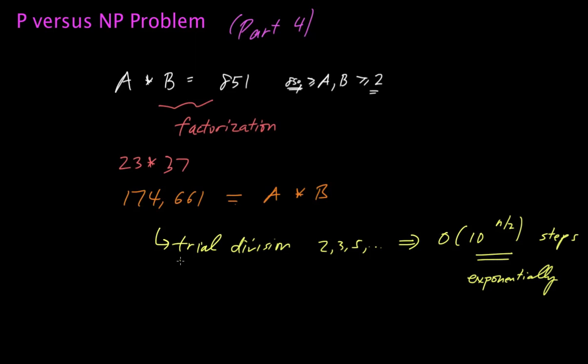It's easy to go in one direction, but it appears hard to go in the other direction. Functions that have that property, where it's easy to go in one direction but somehow seems hard or intractable to go in the other, are known as one-way functions.